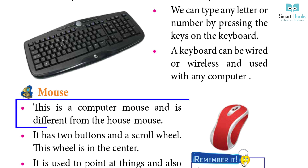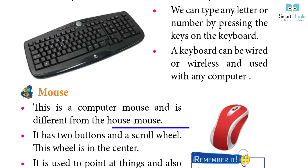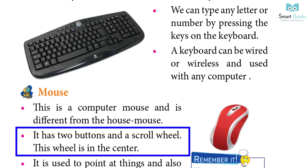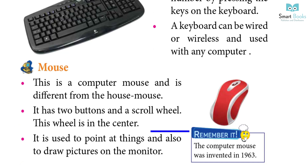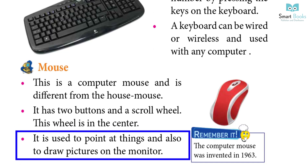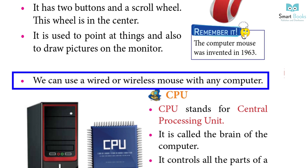Mouse: This is a computer mouse and it is different from the house mouse. It has two buttons and a scroll wheel; this wheel is in the center. It is used to point at things and also used to drag and drop pictures on the monitor. We can use a wired or a wireless mouse with any computer.